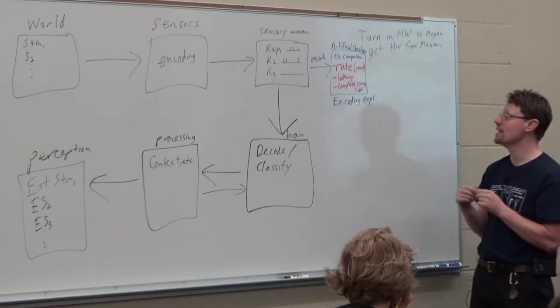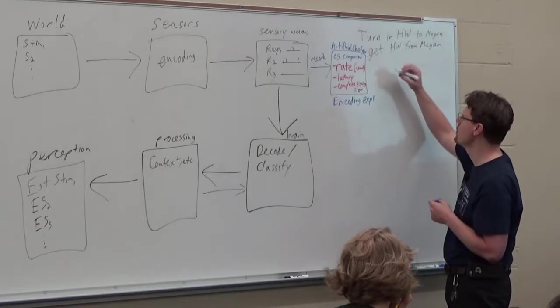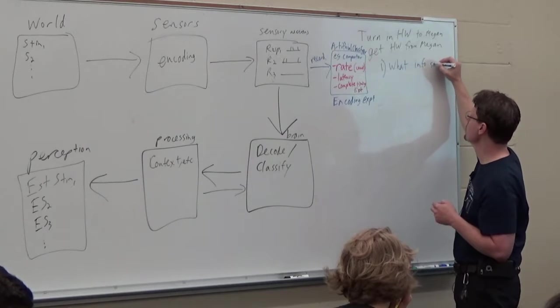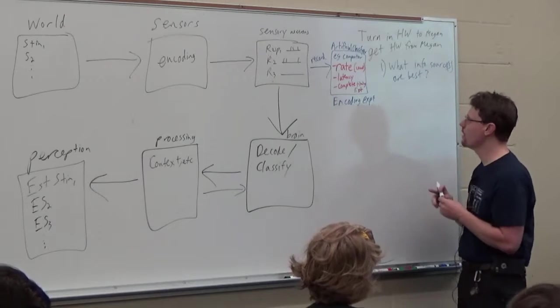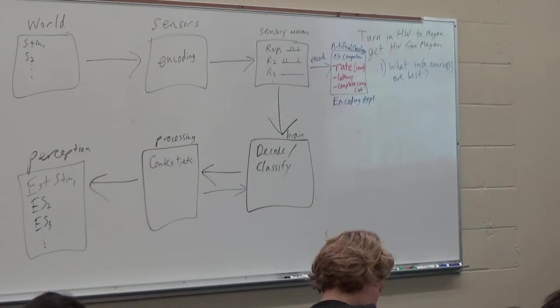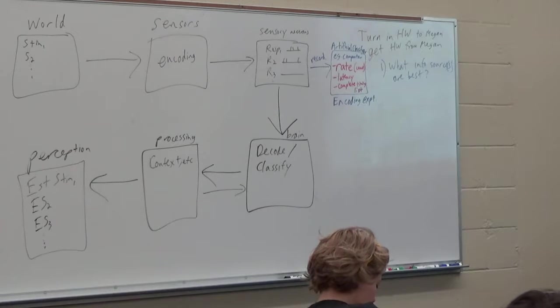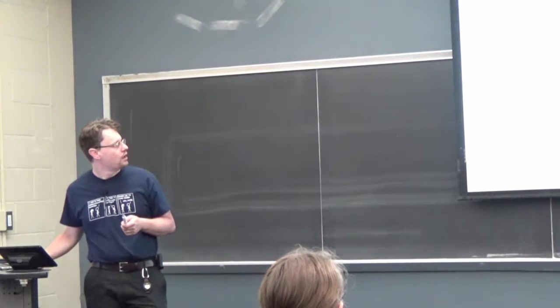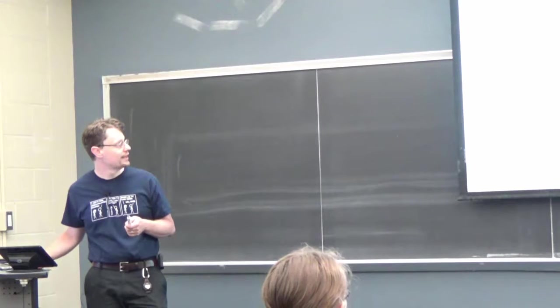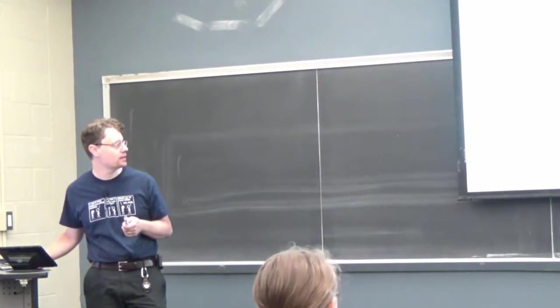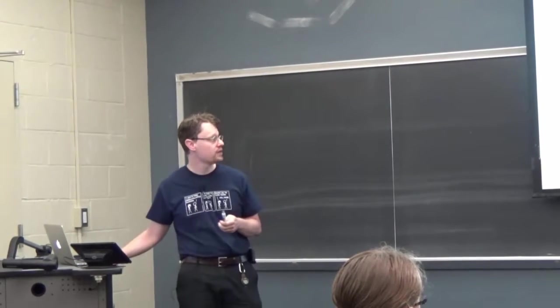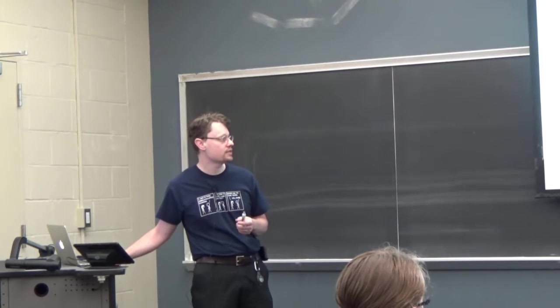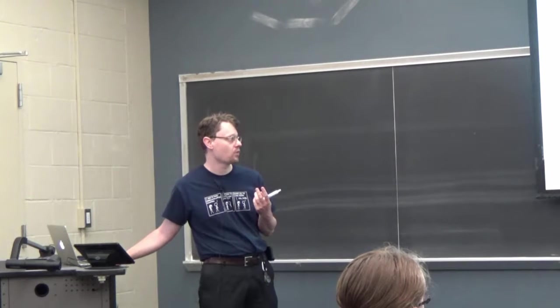The first question we ask is: what information source or sources are best? When we talked about the leech paper, it was pretty clear that the latency information is very precise and gives a low-noise measurement that a computer can use. If the nervous system is sensitive to that, it could also use it. Whereas rate information is a pretty noisy measurement — the nervous system could use it, but it's not going to be quite as useful.